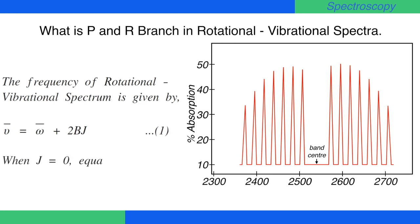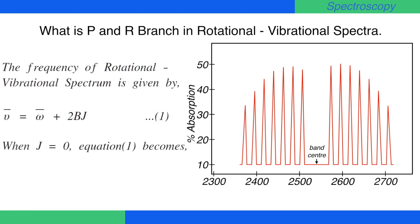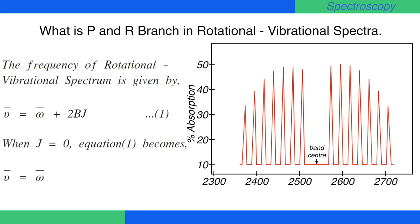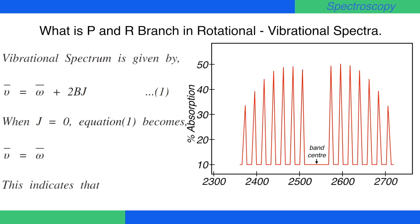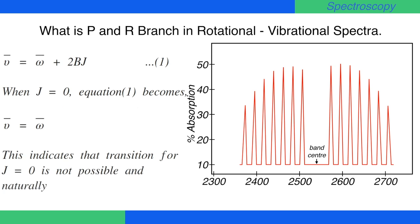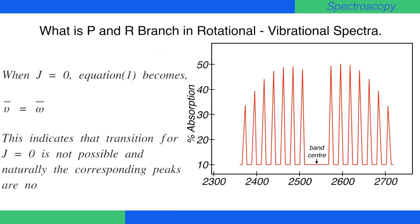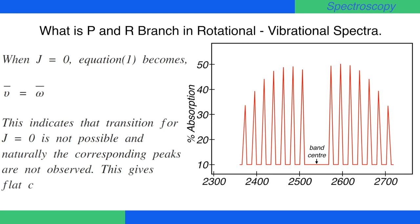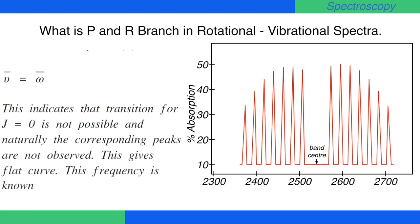When J equals zero, the equation becomes nu bar equals omega bar. This indicates that transition from J equals zero is not possible, and naturally the corresponding peaks are not observed. This gives a flat curve. This frequency is known as band center.